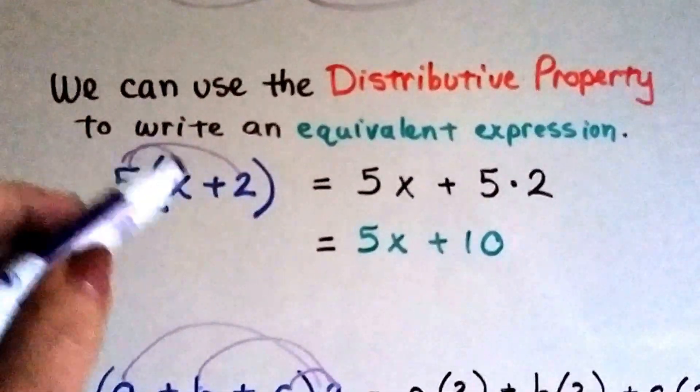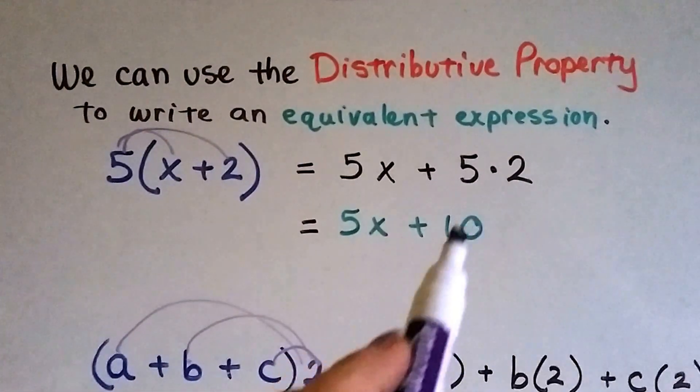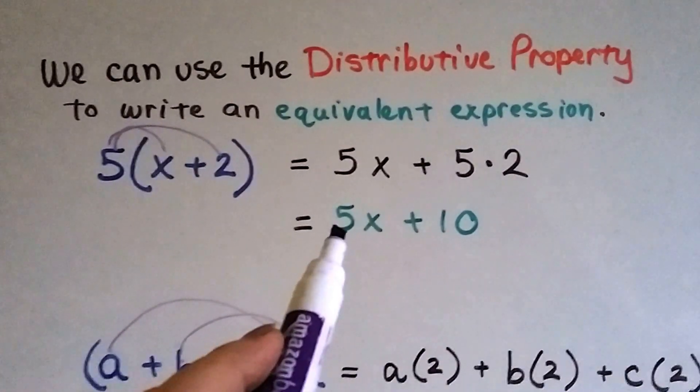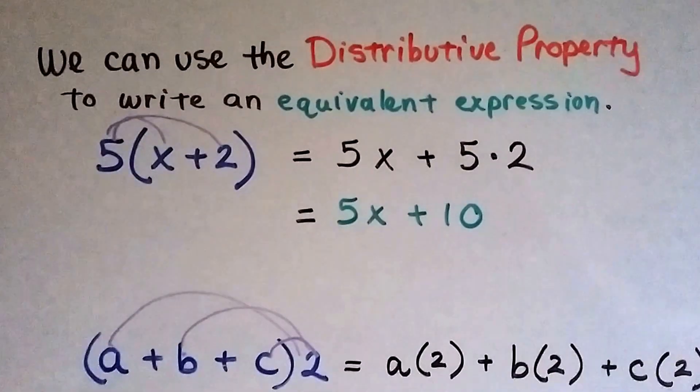This one would be 5x plus 5 times 2. And 5 times 2 is 10, so our equivalent expression is 5x plus 10.